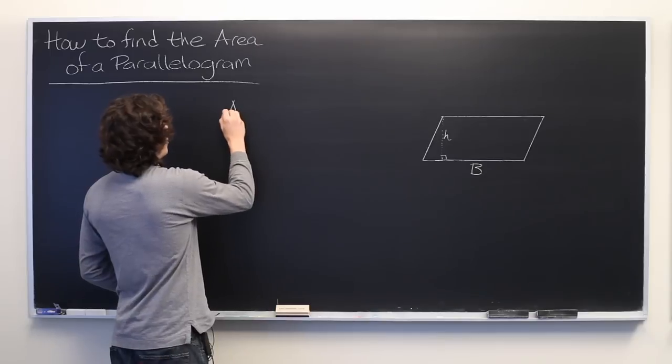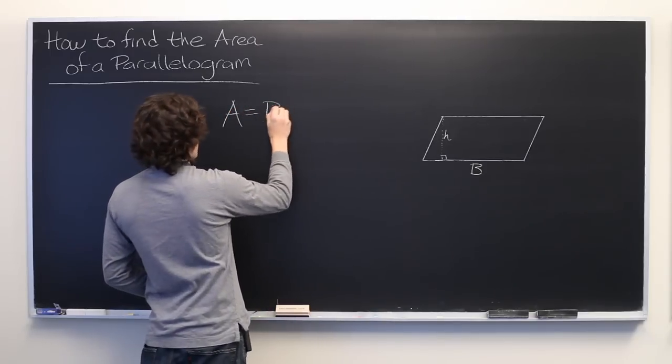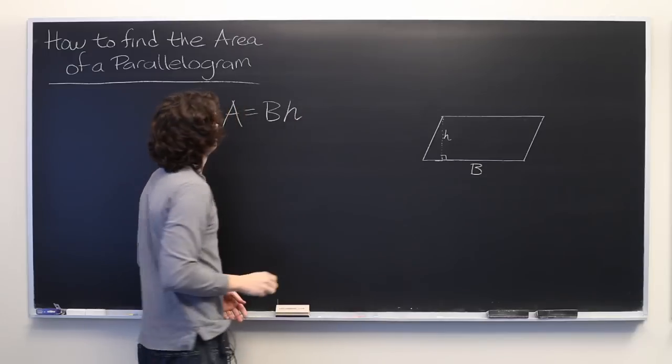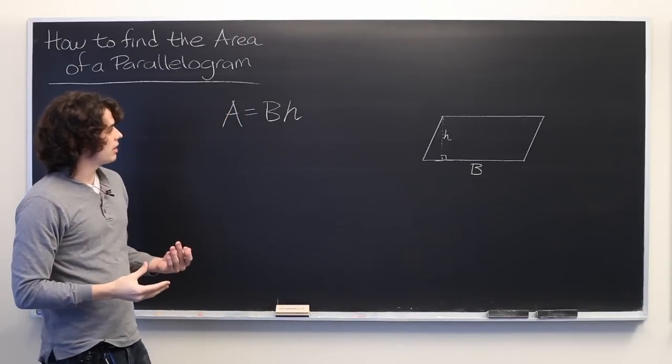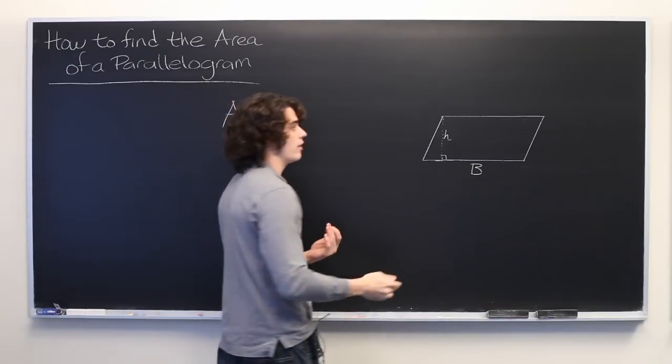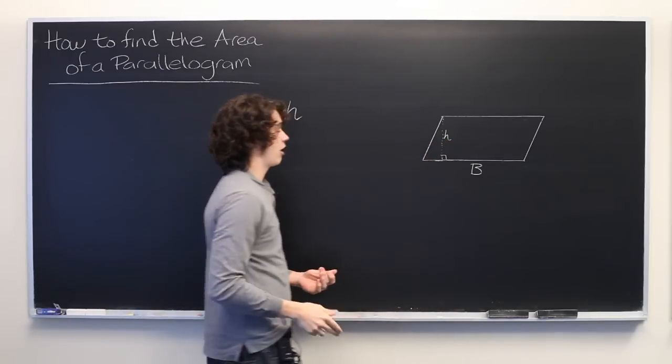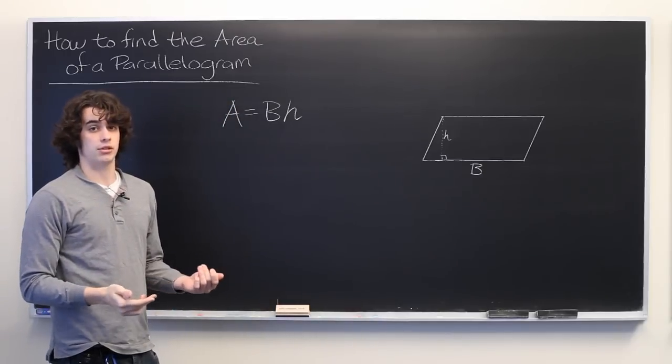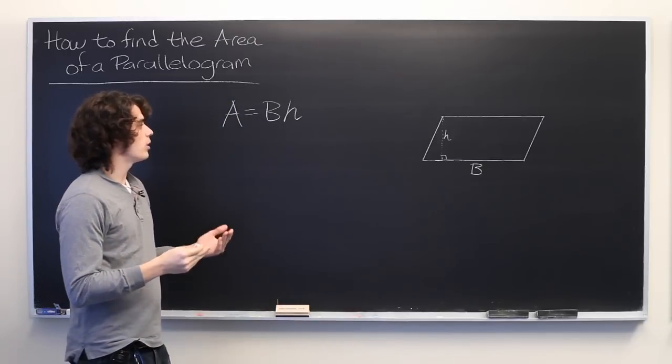Well, the area of a parallelogram is simply base times height, A = Bh. A familiar formula. But the problem is that we are often not given the height of a parallelogram explicitly at the beginning of an exercise. So how can we determine the area?